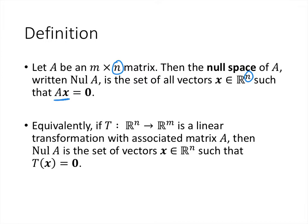Another way to think about this is that if you have T, which is some linear transformation from R^n to R^m, and its associated matrix is A, then the null space of A is just the set of all vectors that when we plug into this function we get 0, because plugging into T(x) just gives us Ax.